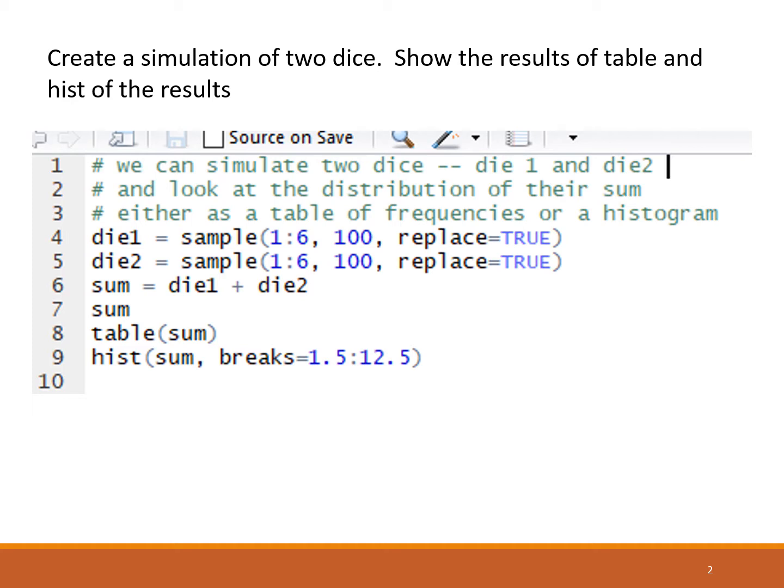It has three arguments. The first argument are the possible values, so that's 1 colon 6. We're pulling the possible values from 1, 2, 3, 4, 5, or 6. The second argument is how many of them we want, 100, and we are doing replace equals true. So if we roll the 5, then that 5 becomes available for subsequent rolls. All those 100 values, which may be randomly selected between 1 and 6, are assigned to a variable called die1.